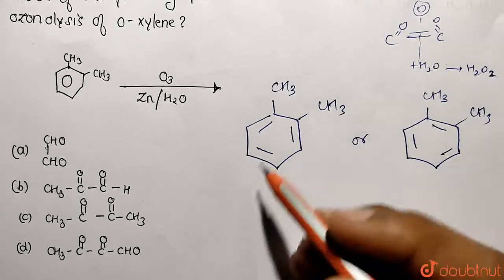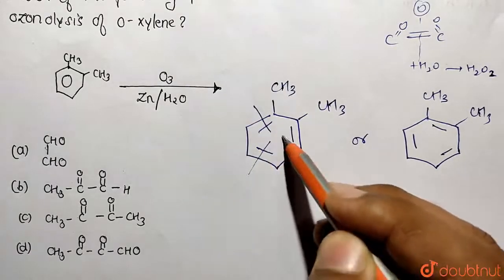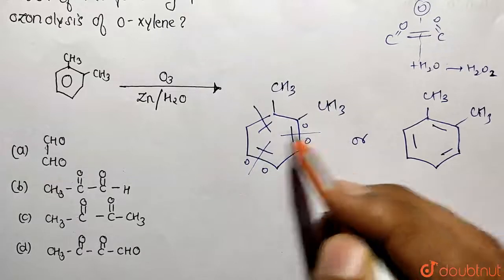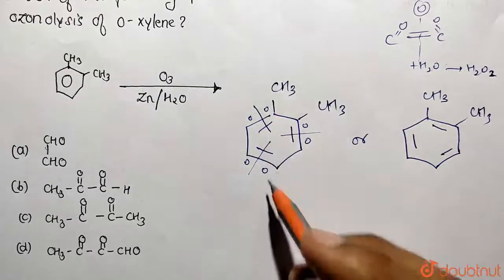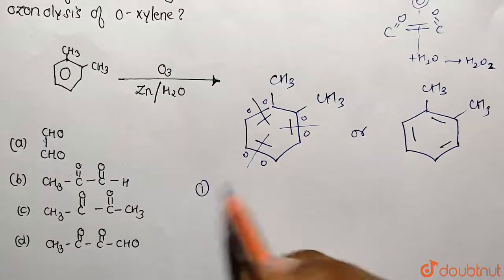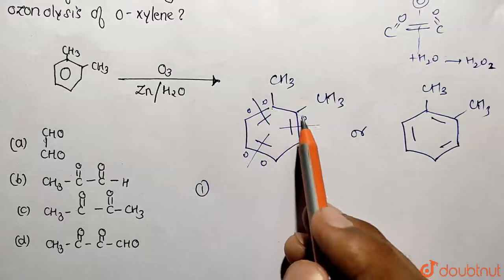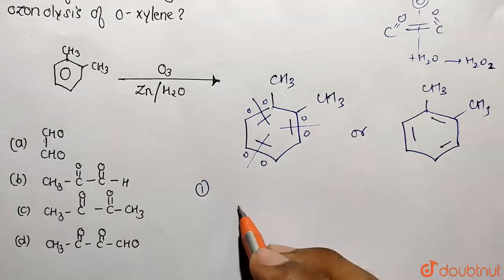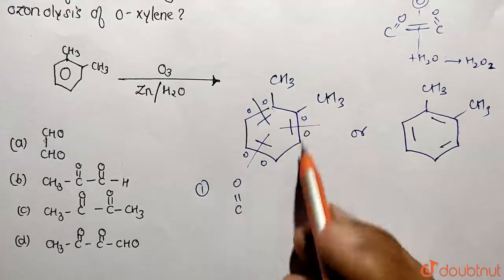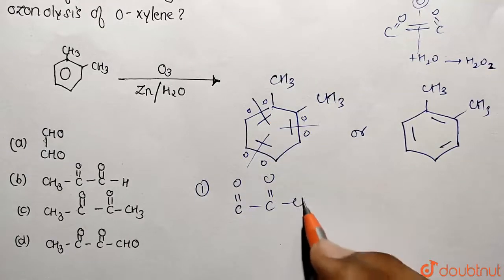Cleavage will be done from this side, this side, and this side, so correspondingly C=O will be formed every time. The first product can be written as C=O single bonded with C=O, and both are connected with CH₃ groups on either side.